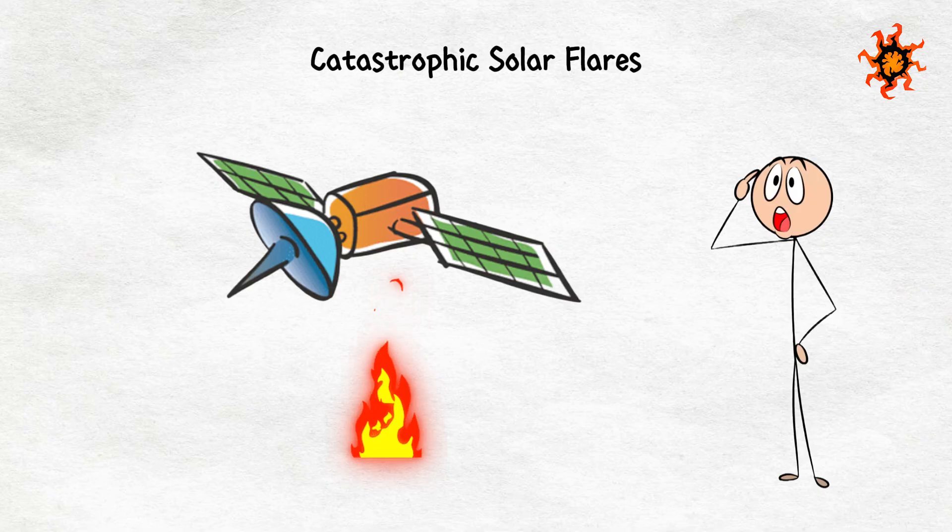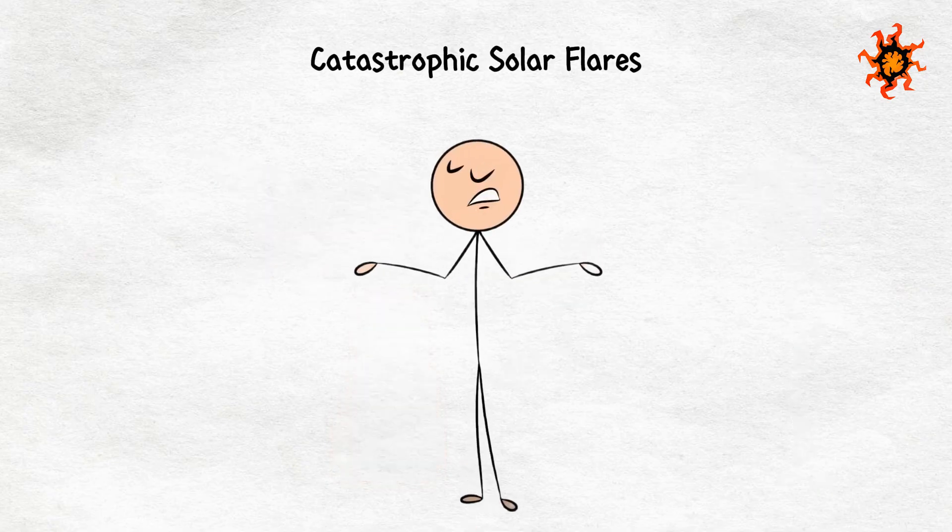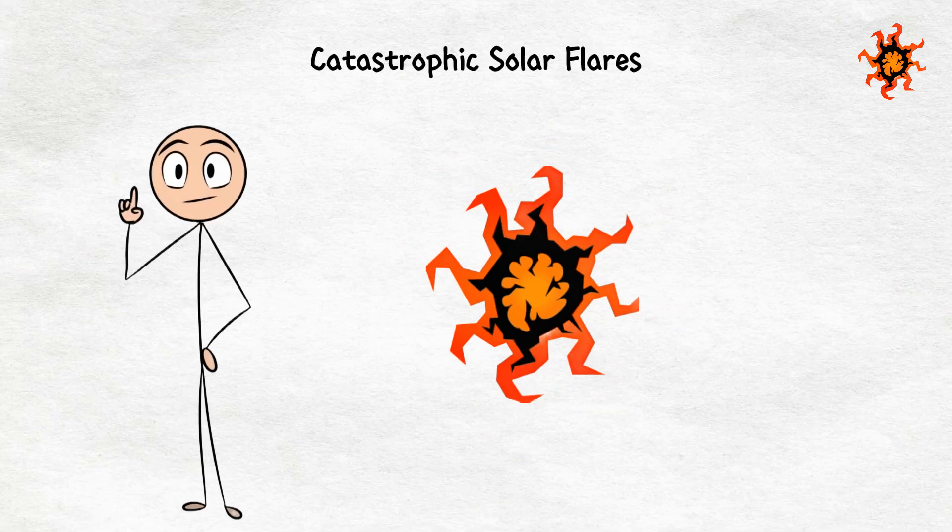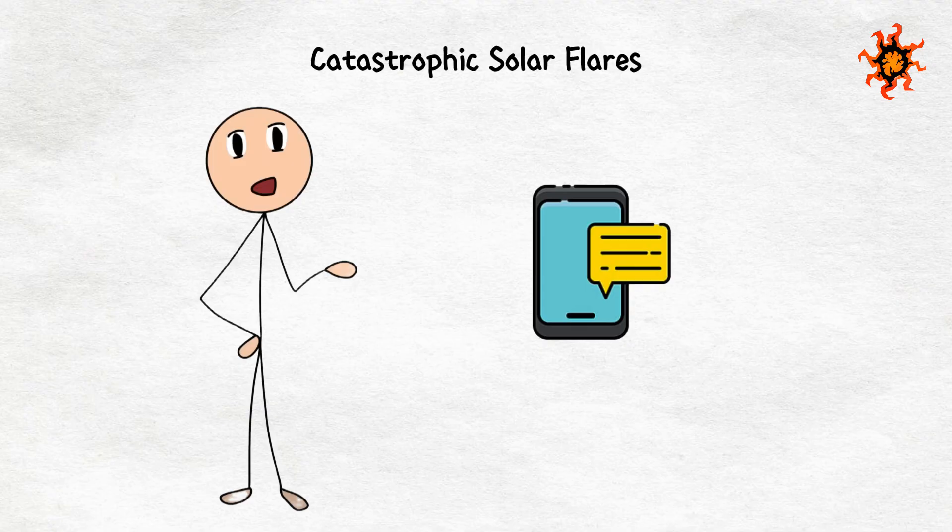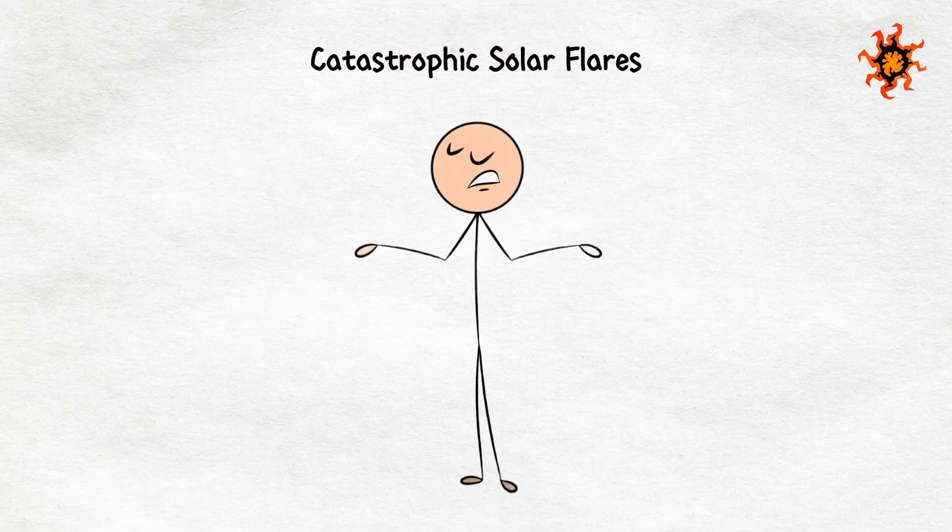When a big one hits, it can fry satellites, mess with our GPS systems, and even knock out power grids. The worst solar flare we know of happened back in 1859, called the Carrington Event. And it caused telegraph systems to catch fire. Imagine sending a text, and your phone literally sparks. That is the level of chaos we are talking about.